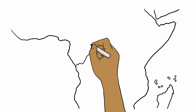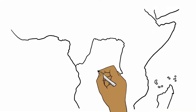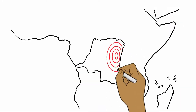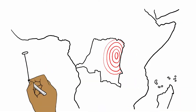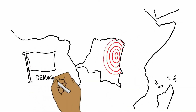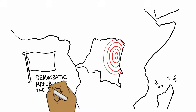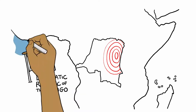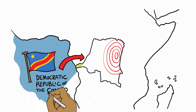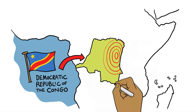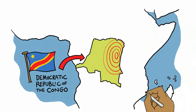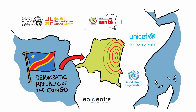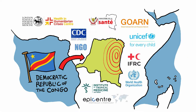Let's look at an example from the 2018-2020 Ebola outbreak in the eastern part of the Democratic Republic of Congo. During the outbreak, the Ministry of Health set up an IOA cell, or a team that included national and international experts.